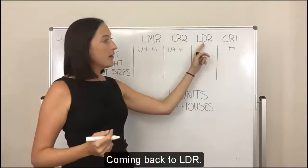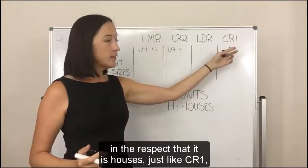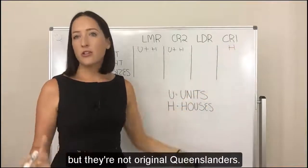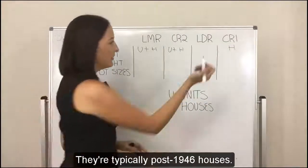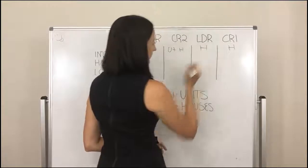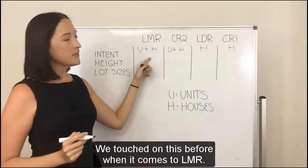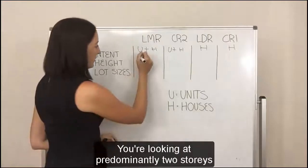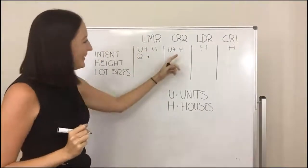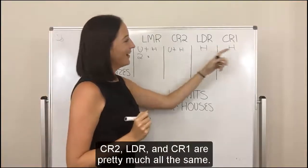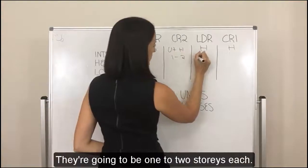Coming back to LDR — that's the next step down from CR1, in that it is houses just like CR1, but they're not original Queenslanders. They're typically post-1946 houses. When it comes to height, LMR is predominantly two storeys with a little bit of three storeys, while CR2, LDR, and CR1 are all pretty much the same — one to two storeys each.